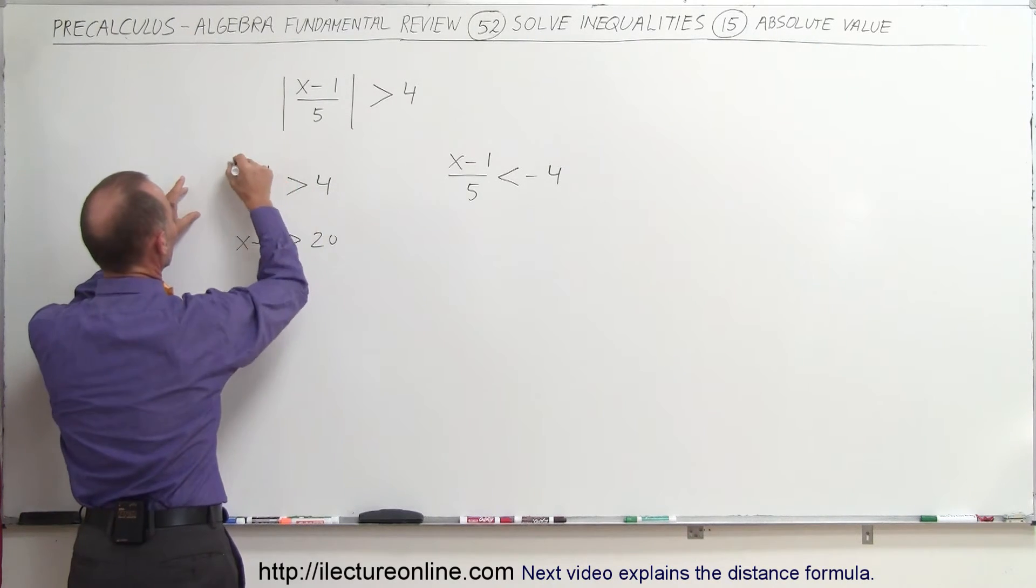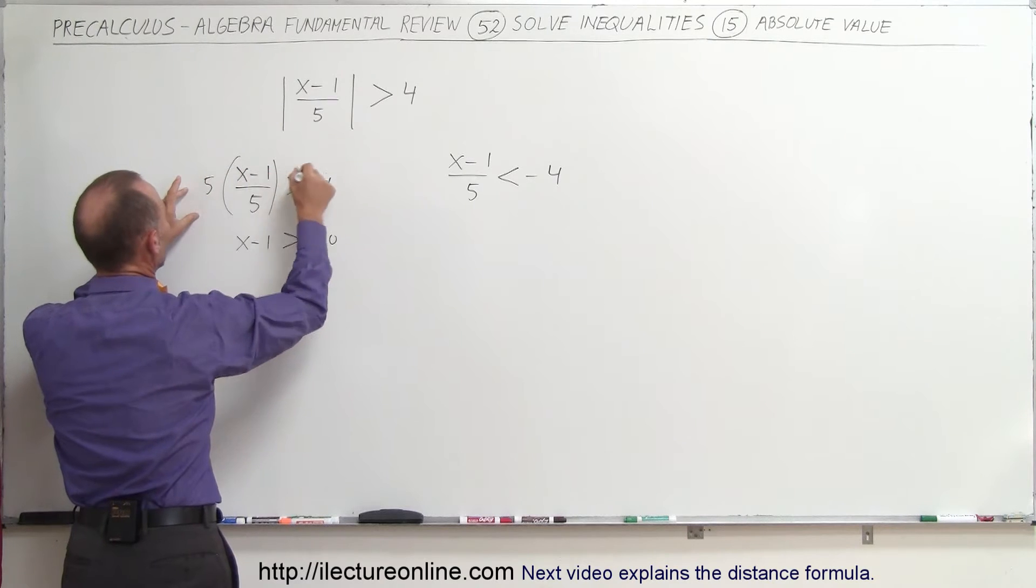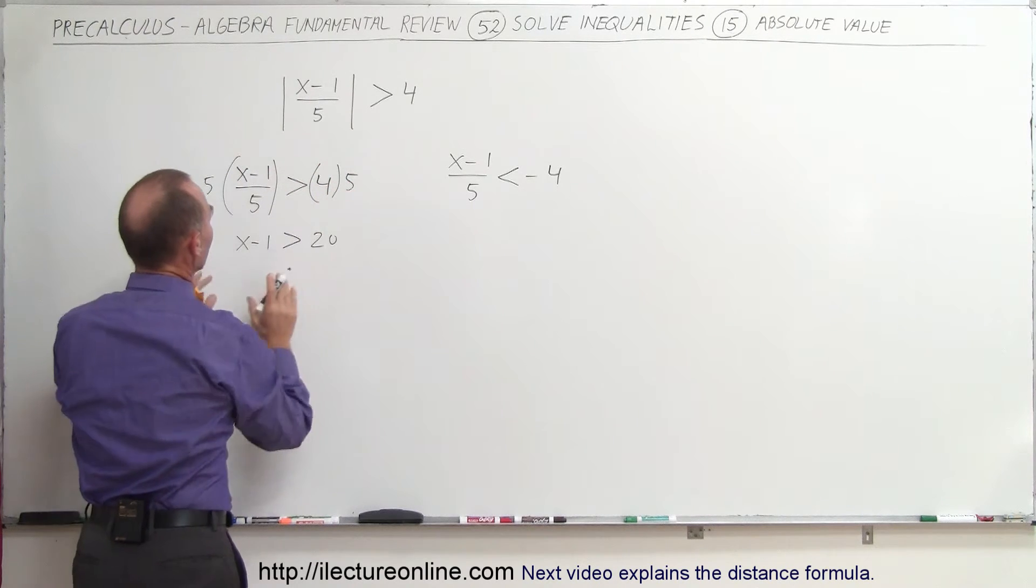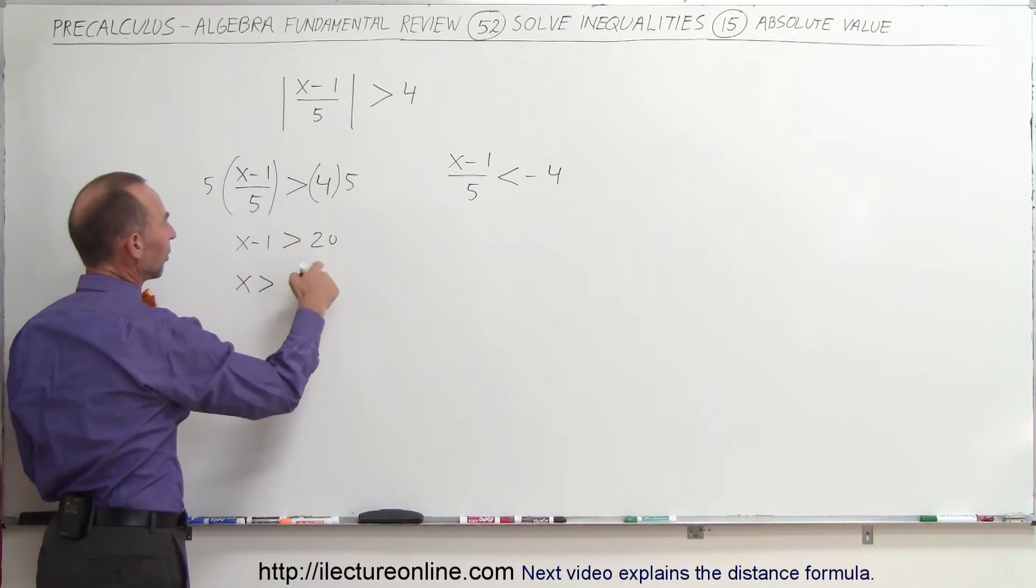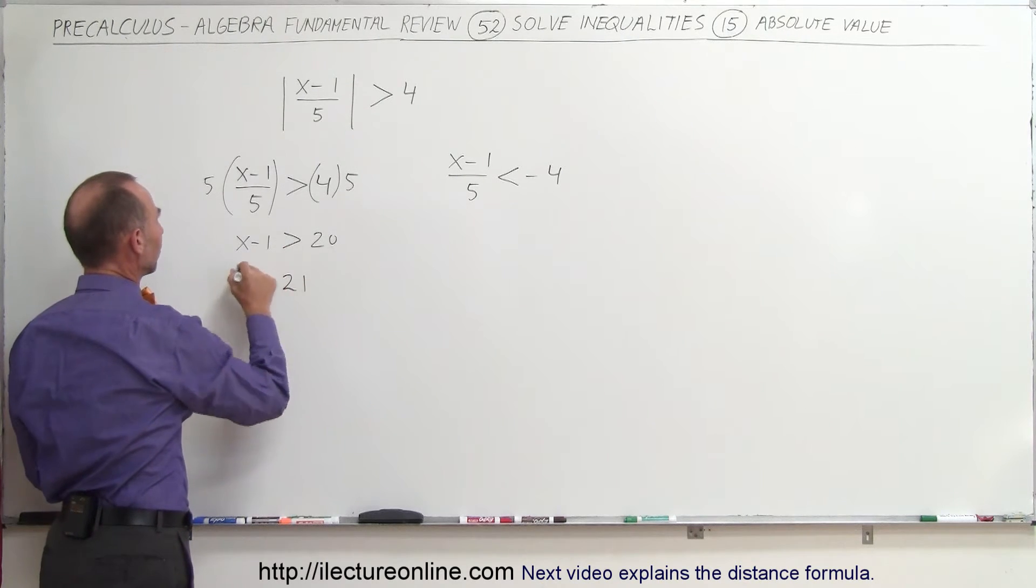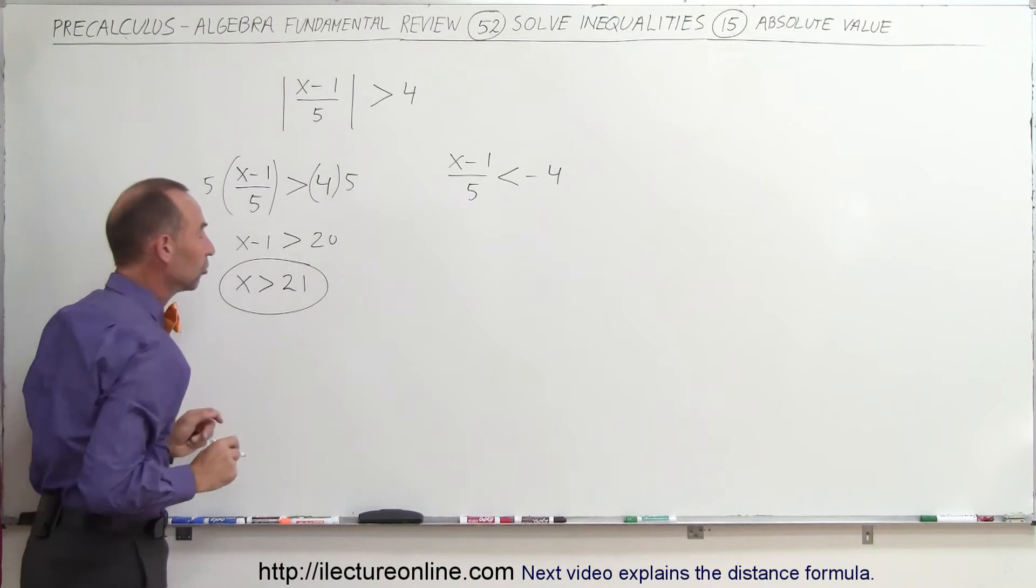We multiply both sides by 5. Now we want to move the negative 1 to the other side. So we get x is greater than 20 plus 1, that becomes 21. And so this is one part of our solution.